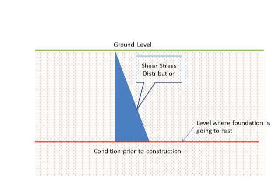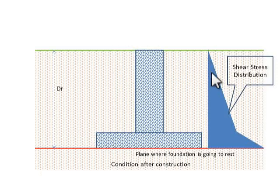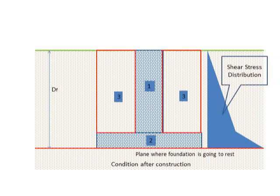Now let's see what happens after the foundation and the superstructure has been constructed. You can see there is a change in the shear stress distribution — the loading at the base of the foundation has increased. The stress on the plane on which the foundation rests is due to three components: the weight of the superstructure, the weight of the foundation, and the weight of the soil column just above the foundation, which we call the overburden.